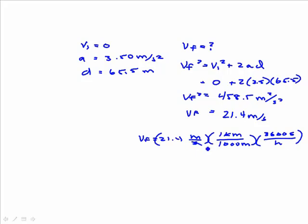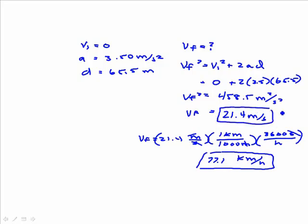And the seconds cancel the seconds, the meters cancel the meters, and we're left with kilometers per hour. And it's the same as taking 21.4 and multiplying by 3.6. So if we take that, multiply by 3.6, we get 77.1 kilometers per hour. So our solution is 21.4 meters per second or 77.1 kilometers per hour.